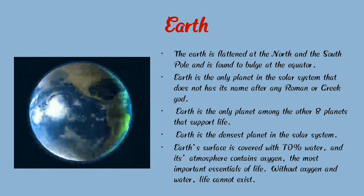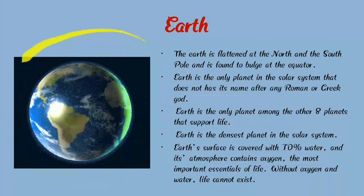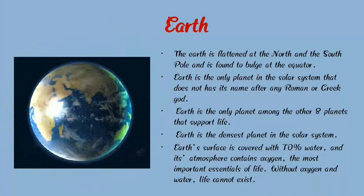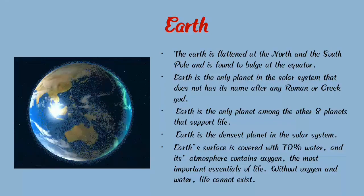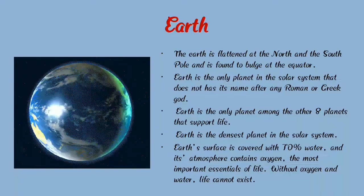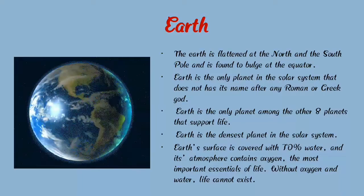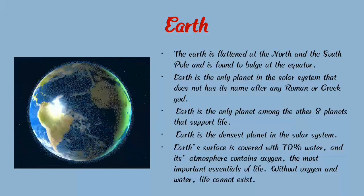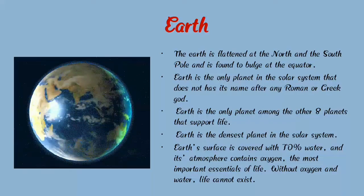Earth. E-A-R-T-H. Here we can see a photograph of our Earth and we live on Earth. The Earth is flattened at the North and South Pole and is found to bulge at the equator. Earth is the only planet in the solar system that does not have its name after any Roman or Greek god. Earth is the only planet among the other 8 planets that supports life.